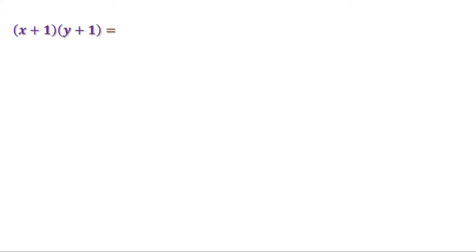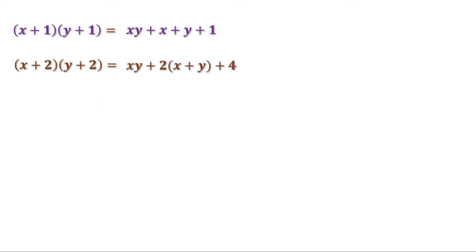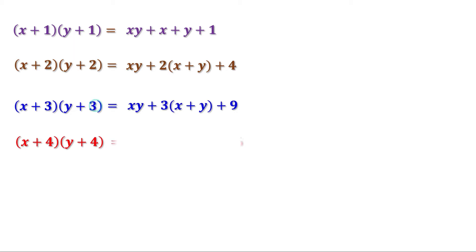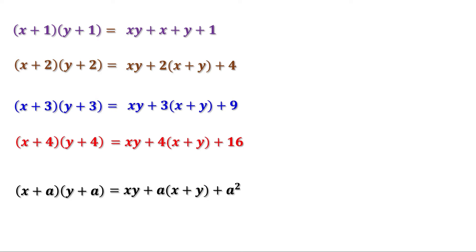We have seen: x plus 1 into y plus 1 equals xy plus x plus y plus 1. x plus 2 into y plus 2 equals xy plus 2 into x plus y plus 4. x plus 3 into y plus 3 equals xy plus 3 into x plus y plus 9. x plus 4 into y plus 4 equals xy plus 4 into x plus y plus 16. In general, x plus a into y plus a equals xy plus a into x plus y plus a square.